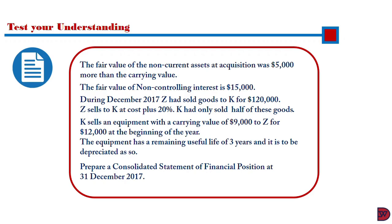During December 2017, Zira sold goods to KESA for $120,000, at cost plus 20%. KESA had only sold half of these goods, so unrealized profit is also required here. KESA also sold equipment with a carrying value of $9,000 to Zira for $12,000 at the beginning of the year. The equipment has a remaining useful life of three years and is to be depreciated accordingly. We are to prepare a consolidated statement of financial position at 31st December 2017.